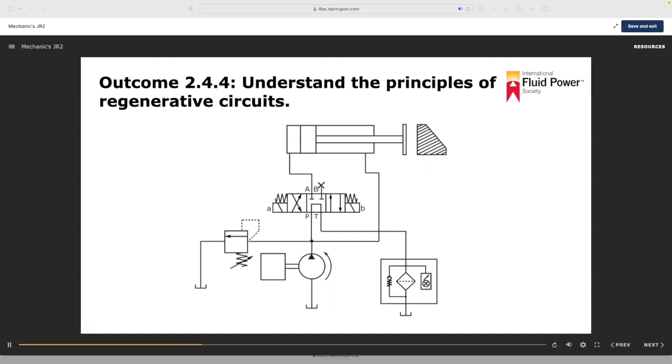When used on cylinders, it is the rod end exhaust flow that is regenerated back into the blind end flow. This regeneration creates equal pressure on both sides of the piston.